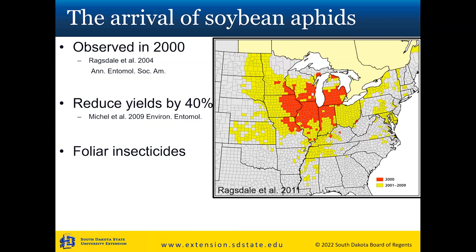There's been work on host plant resistance for soybean aphids, and a few varieties are out there with single genes, but there's still a lot to be done. Host plant resistance works really well, and hopefully we'll see more available in the future. In a year like 2022 when we had some flare-ups, if we would have had resistance out in the field, many of those fields likely would not have needed any insecticide applications.